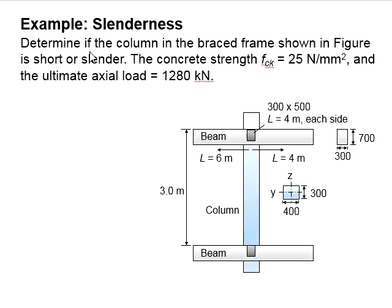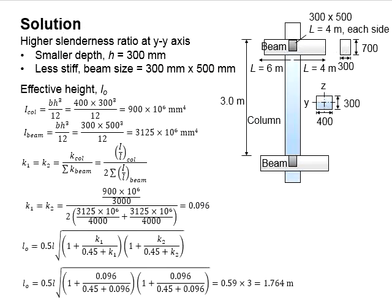You may pause the video for a while to work out the solution. To solve this question, theoretically you need to check for the slenderness in both axes. However, in this case, a higher slenderness ratio is obviously in the y-y axis. The column width is 300 mm which is a smaller width and the beam size in the minor axis here is smaller which is 300 times 500 mm.